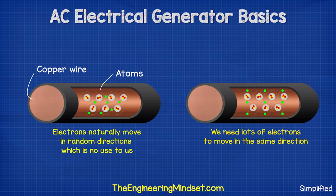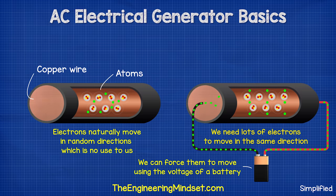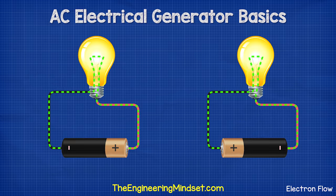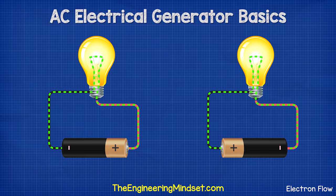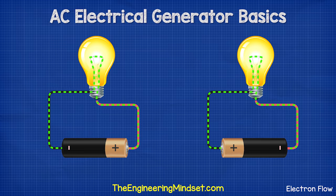We need lots of electrons to flow in the same direction, and we do that by applying a voltage difference across the two ends of a wire. This forces the electrons to flow. If we reverse the battery, the electrons flow in the opposite direction.